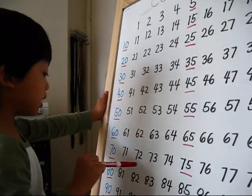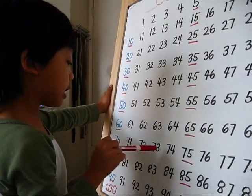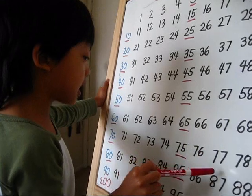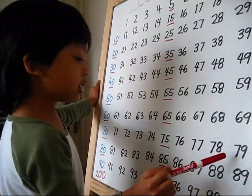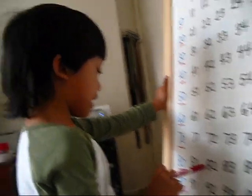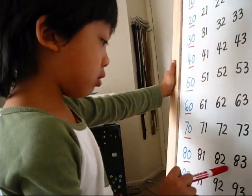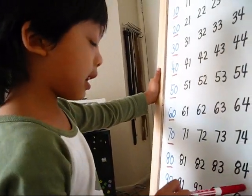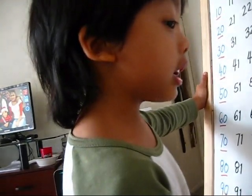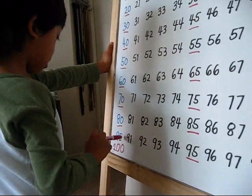70, 71, 72, 73, 74, 75, 76, 77, 78, 79, 80, 81, 82, 83, 84, 85, 86, 87, 88, 89, 90.